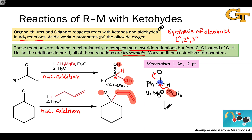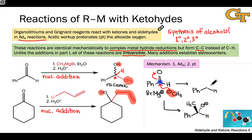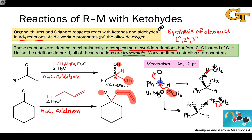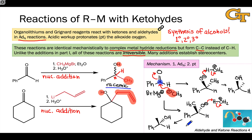From a stereochemical perspective, this can happen two ways. If the methyl group comes from above, we end up with a structure with the alkoxide oxygen pushed to the back. If the methyl group comes from below, we end up with the opposite enantiomer, with the methyl group behind the screen and the alkoxide oxygen pushed above. After this nucleophilic addition step, addition of aqueous acid in workup completes the mechanism, protonating the anionic alkoxide oxygen. This happens to both enantiomers, so we end up with a 50-50 mixture of enantiomeric alcohols.